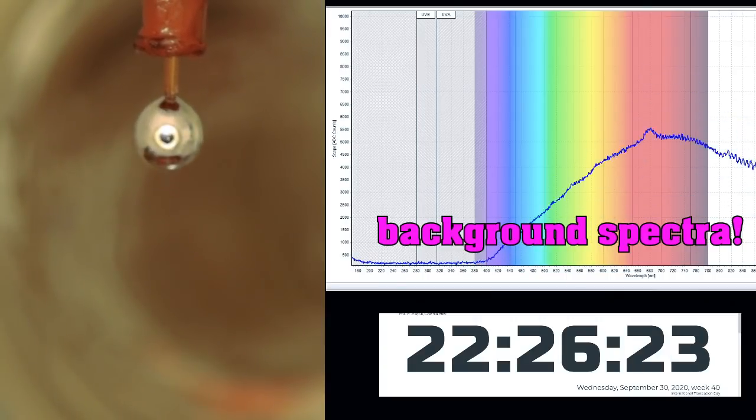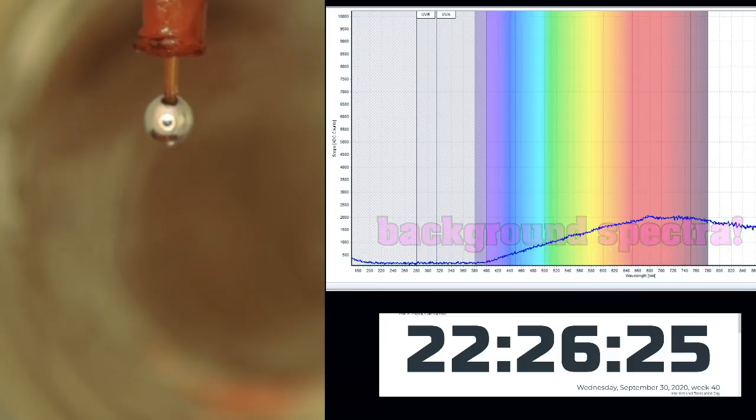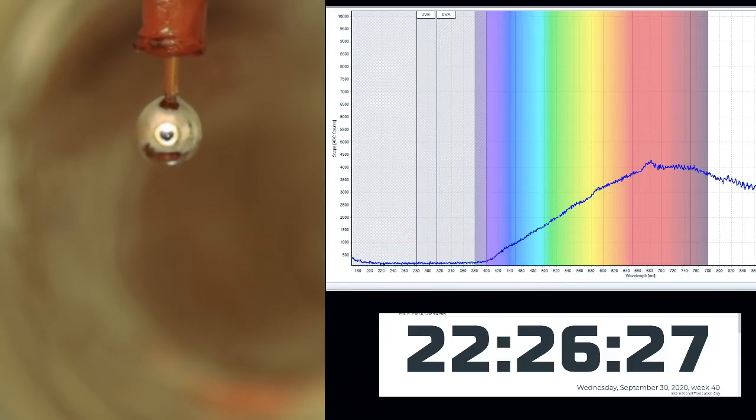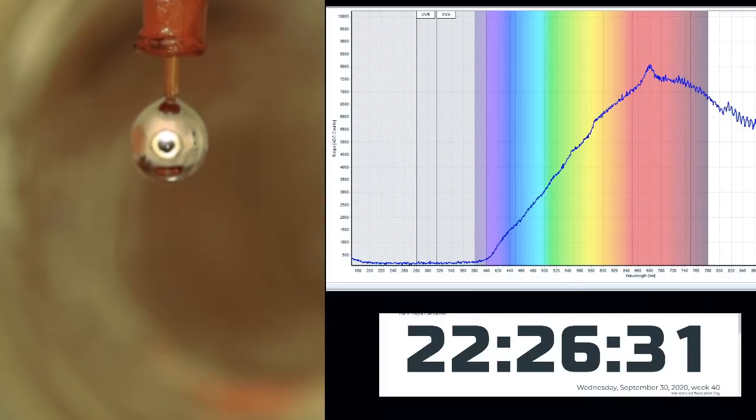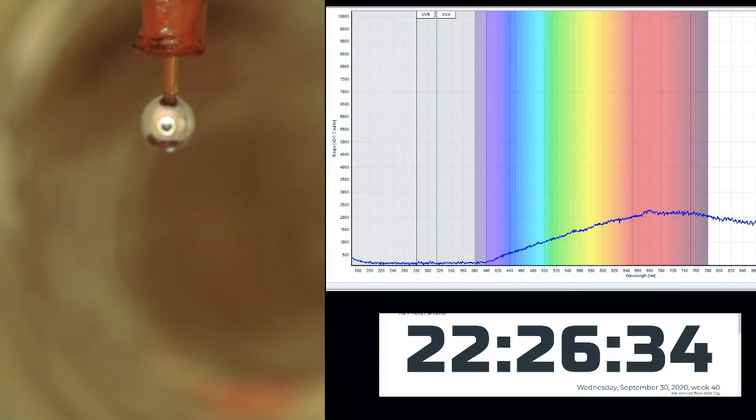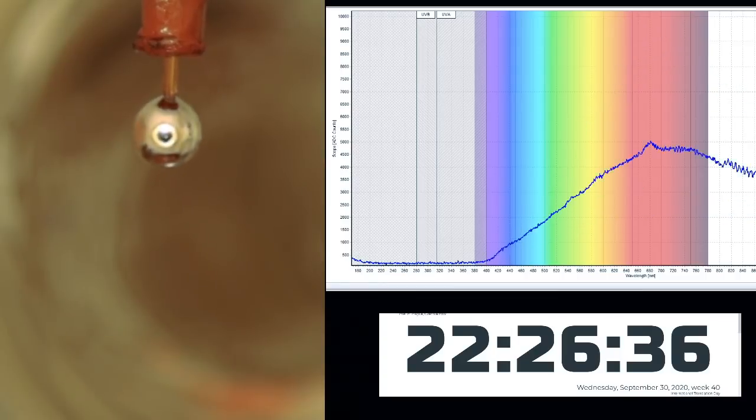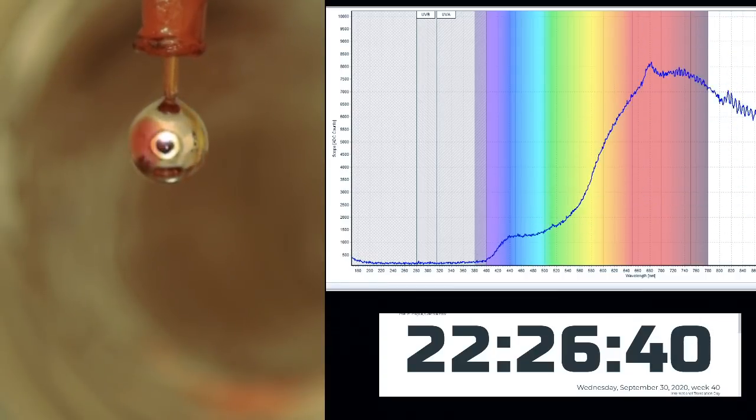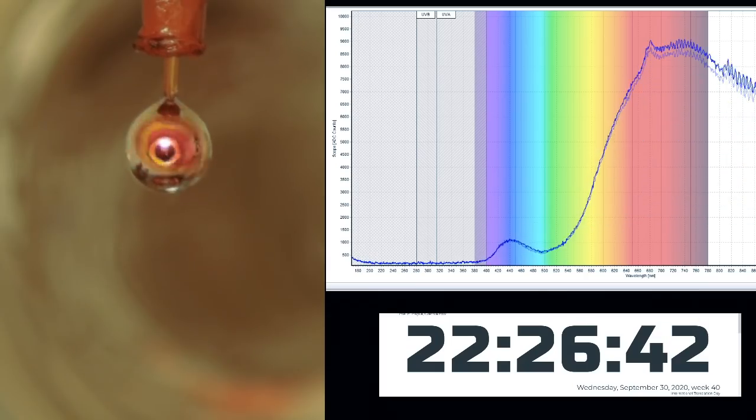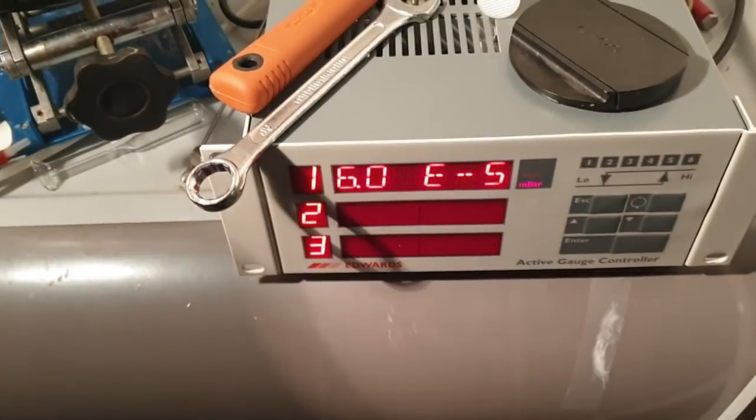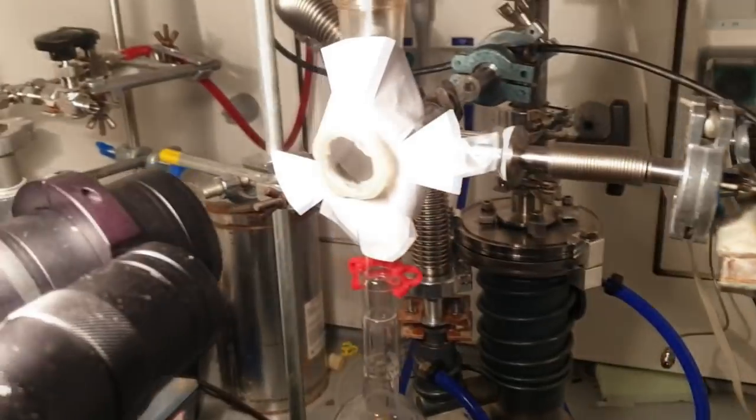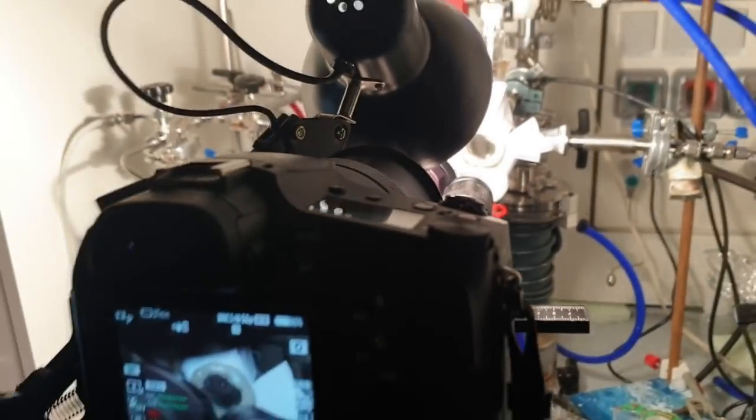Okay, so the vacuum is currently at 7 to the minus 6. Let's let some water in there. And there you go. This is 5, 4, 7 to the minus, 8 to the minus 5. And that's what it looks like on the screen. Okay, that's about 5 to the minus 5 on the vacuum.